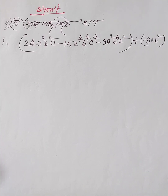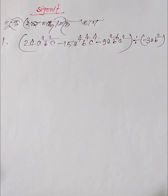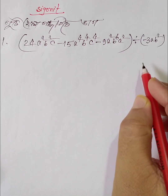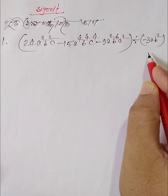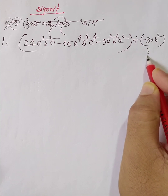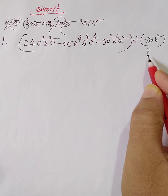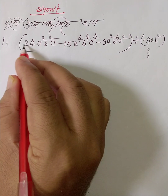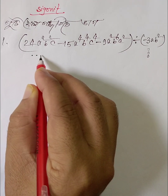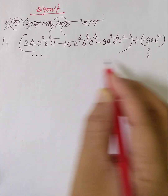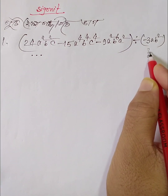Assalamu alaikum, dear students. Today we will learn division with dots - that is, division with dot notation. First, for the divisor, the coefficient is negative 3, so we will take three dots like this. For the dividend's plus 24, we will take twenty-four dots like this. I took three at a time, noting the antidot signs.